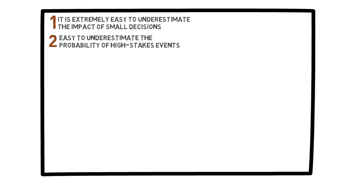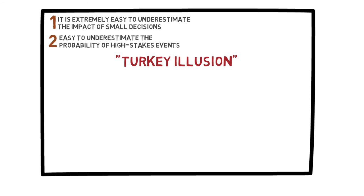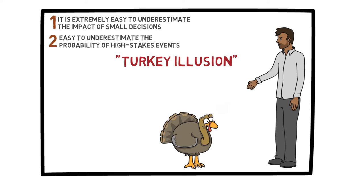For example, Nassim Taleb discusses what is called the turkey illusion. Consider a turkey that is being fed every day by a butcher. The turkey considers the butcher a nice person who will not harm him because he associates him with food and care. After hundreds of days, once the turkey has reached its adult size, the butcher kills the turkey. The event of killing the turkey was statistically rare — it only happened one day out of hundreds — so the turkey was completely oblivious to it. The point is that it is easy for us to become like the turkey: we may disregard an event simply because it is technically rare, but still inevitable.